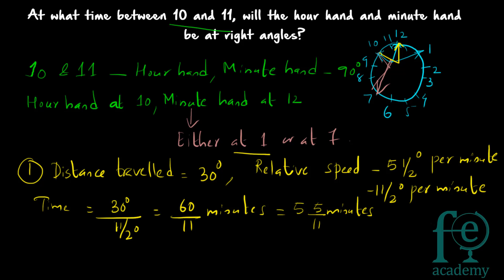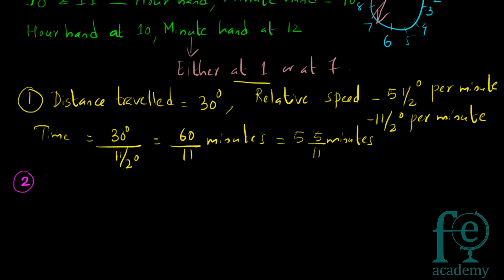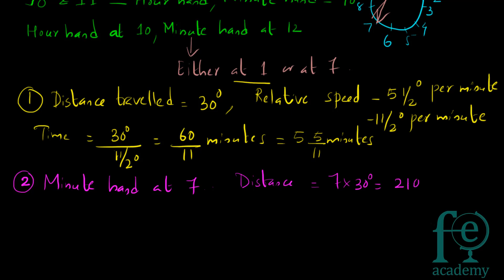So the first case is when the minute hand is at position 1 — the time will be 5 5/11 minutes past 10. Now for the second option, the minute hand is at 7. The distance to be travelled is calculated as each hour equals 30°, so from 12 to 7 it is 7 × 30° = 210 degrees.